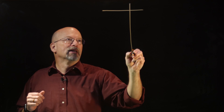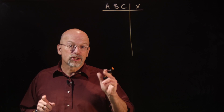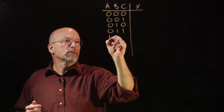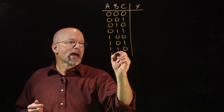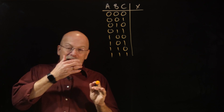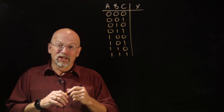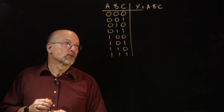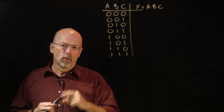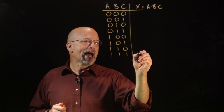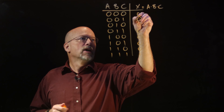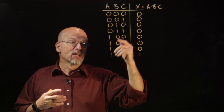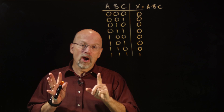Let's look at something really simple. This three-input truth table has three inputs, which means we have two to the third, or eight possible combinations of ones and zeros. For a simple logic circuit — an AND gate — let's say X equals A and B and C. We know that the only time an AND gate outputs a one is if all of its inputs are one, and that happens in this last row. So the truth table for a three-input AND gate has seven zeros and one one.